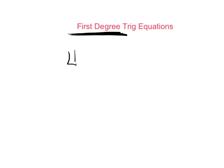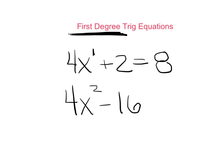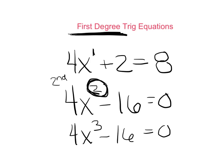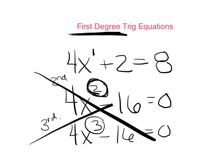Today is called first degree trig equations. These will be by far the easiest equations. First degree is going to have an exponent of 1. For example, if I said 4x plus 2 equals 8, this is a first degree equation because my exponent on my x is a 1.